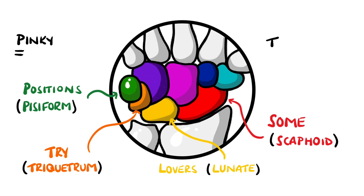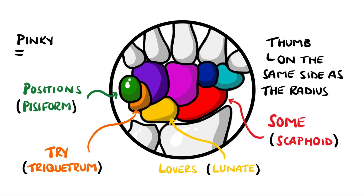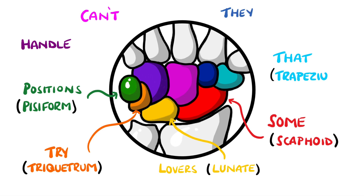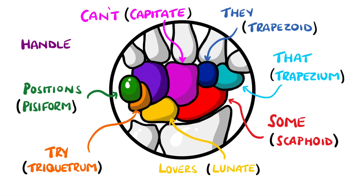The scaphoid and lunate articulate with the radius, and the radius is always on the same side as the thumb. The second half of the mnemonic is 'That They Can't Handle,' which is for the trapezium, trapezoid, capitate, and hamate.